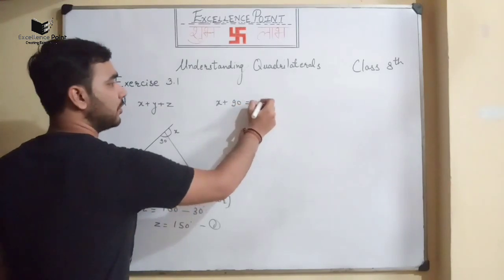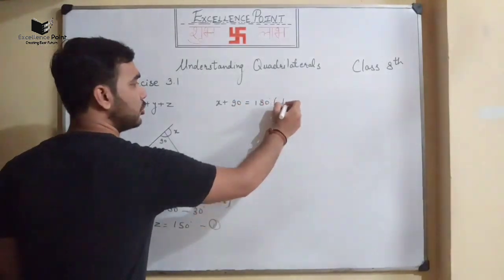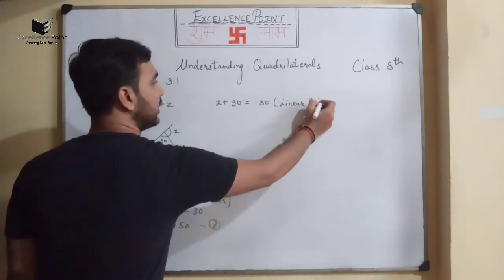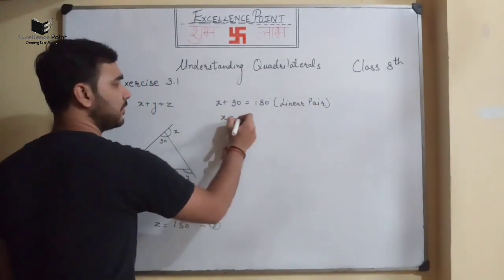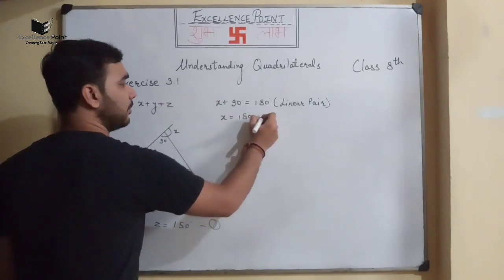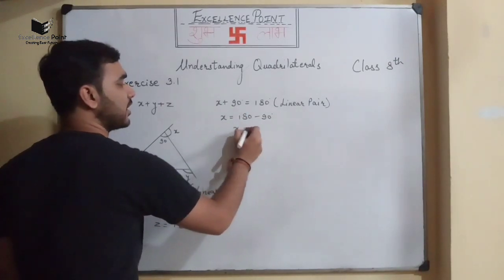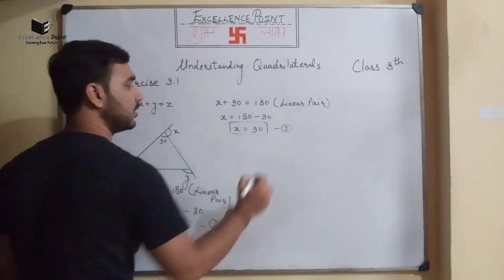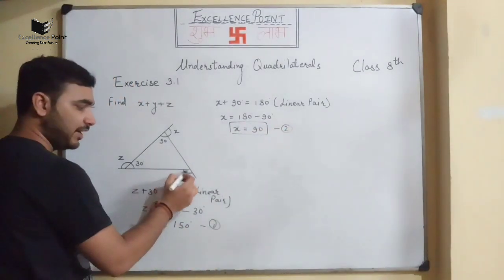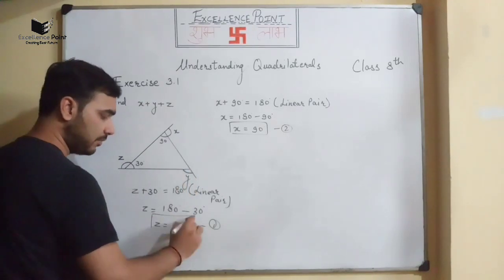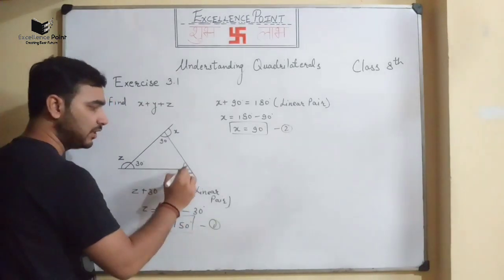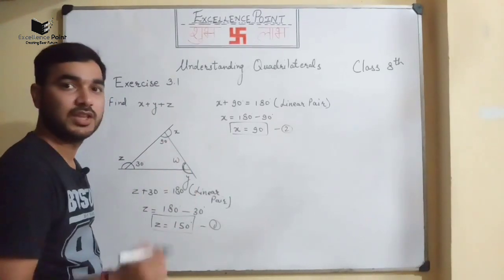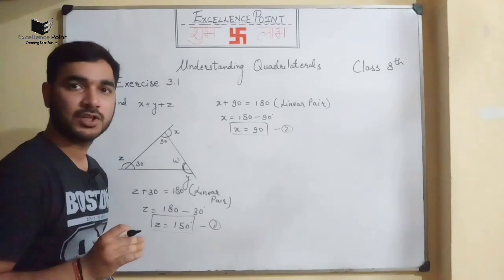Similarly, x + 90° = 180° by linear pair, so x = 90°. This is equation 2. To find y, we let the interior angle of the triangle be w.